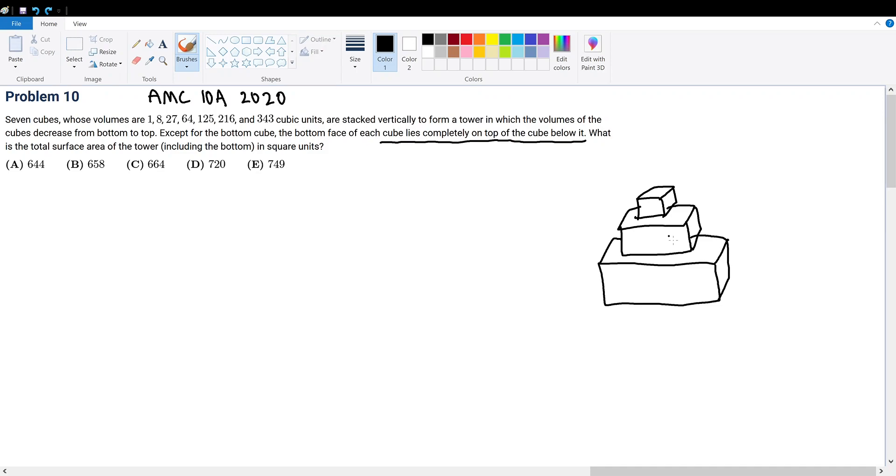AMC 10A 2020 Problem 10. Seven cubes whose volumes are 1, 8, 27, 64, 125, 216, and 343 cubic units are stacked vertically to form a tower in which the volumes of the cubes decrease from bottom to top. Except for the bottom cube, the bottom face of each cube lies completely on top of the cube below it. What is the total surface area of the tower including the bottom in square units?